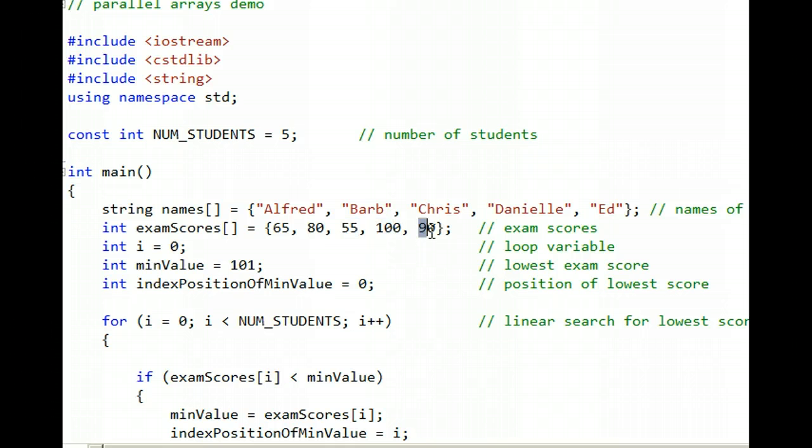100, nope, not lower. 90, nope, not lower. So 55 is the lowest score that my eyeball scans across there and detects.